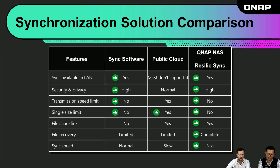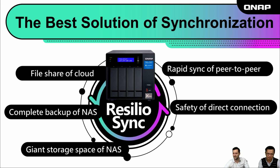Finally, let's look at the comparison table. You can find that we gather all the advantages of sync software and public clouds. The sync speed is the most excellent because we are peer-to-peer — it's very fast. To summarize the advantages of ResilioSync and QNAP NAS: it offers file sharing like the cloud, complete backup with NAS, giant storage space of NAS, rapid sync via peer-to-peer, and the safety of direct connection. Safety is important.